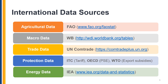Apart from input-output tables, a number of other data sources are used when constructing the GTAP database. This includes international datasets on agriculture from the Food and Agriculture Organization, macroeconomic data from the World Development Indicators, merchandise trade data based on the UNCOMTRADE database, protection datasets using tariff data from the International Trade Center, producer support estimates from the Organization for Economic Cooperation and Development, export subsidies from the World Trade Organization, as well as energy data sourced from the International Energy Agency.